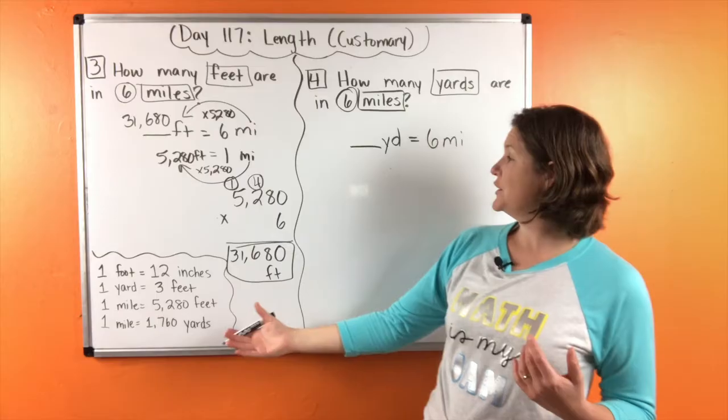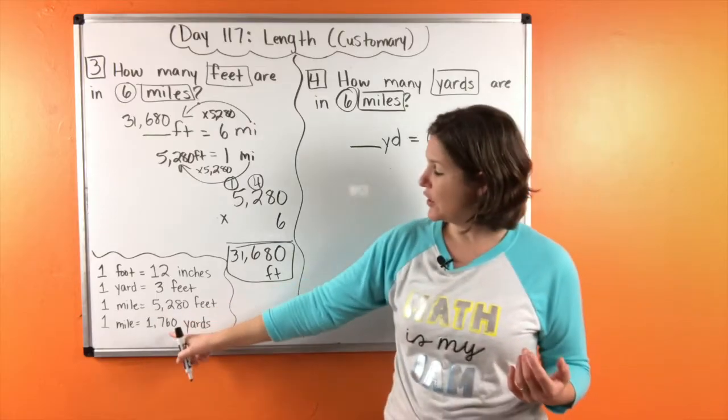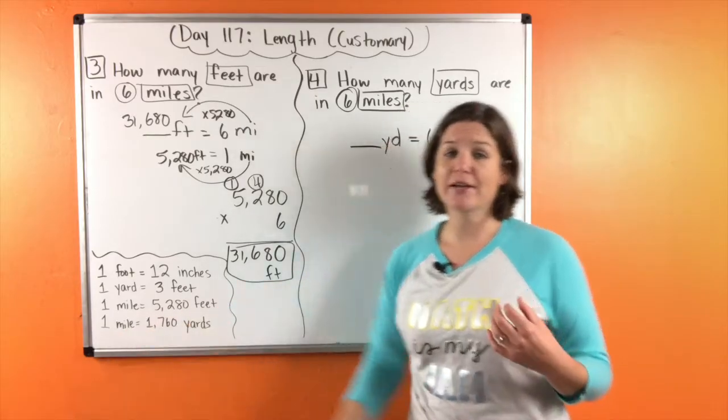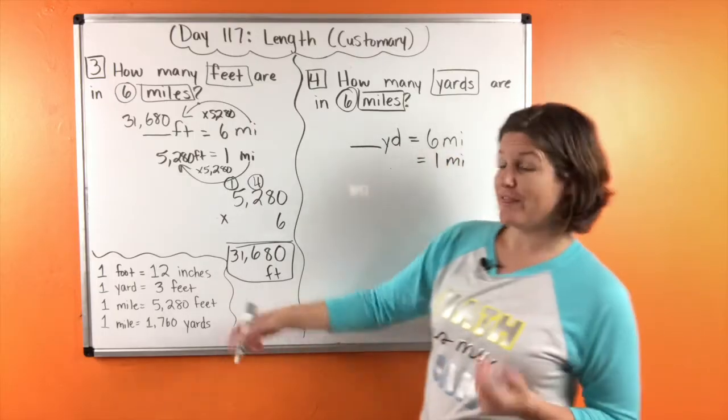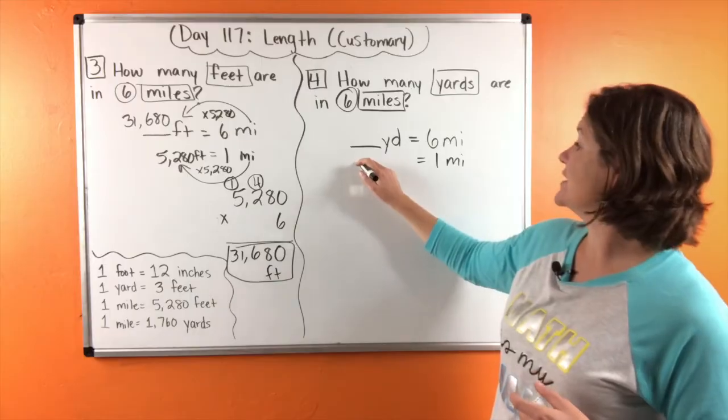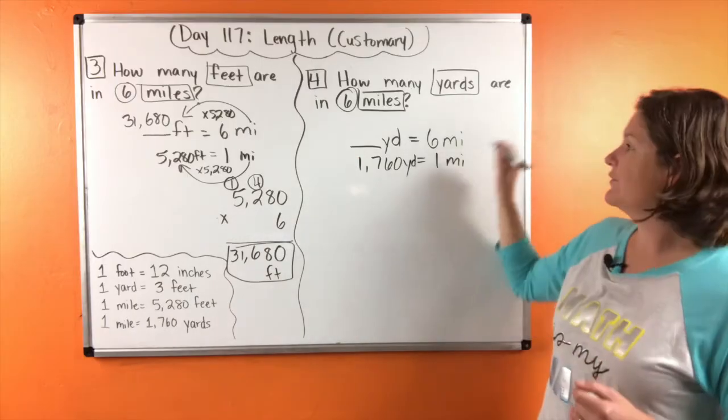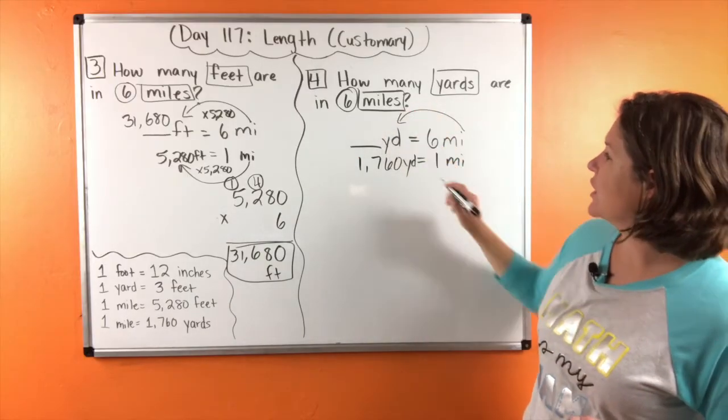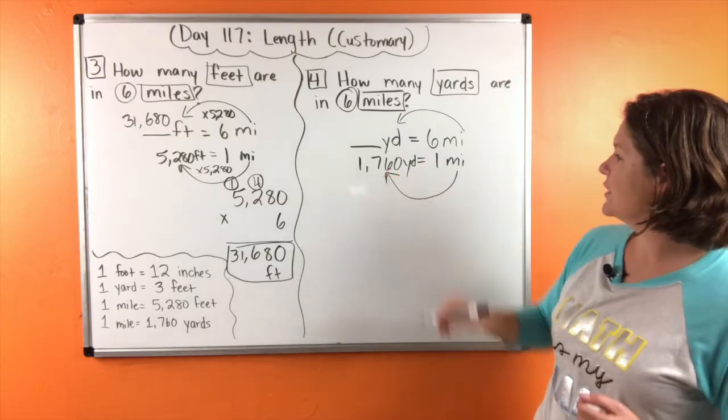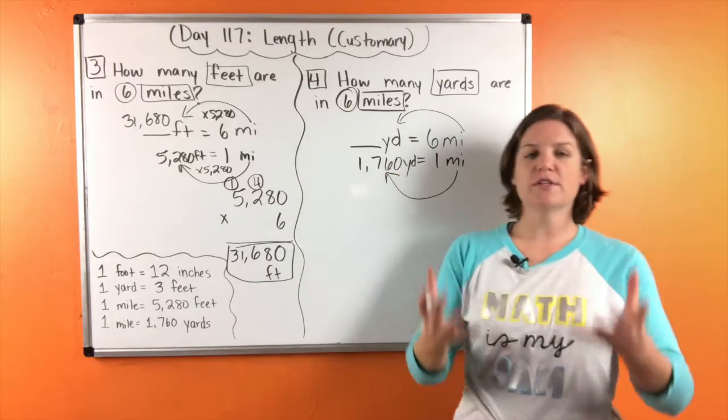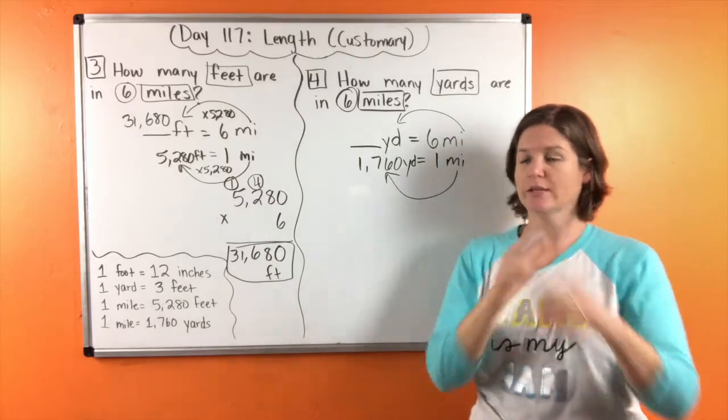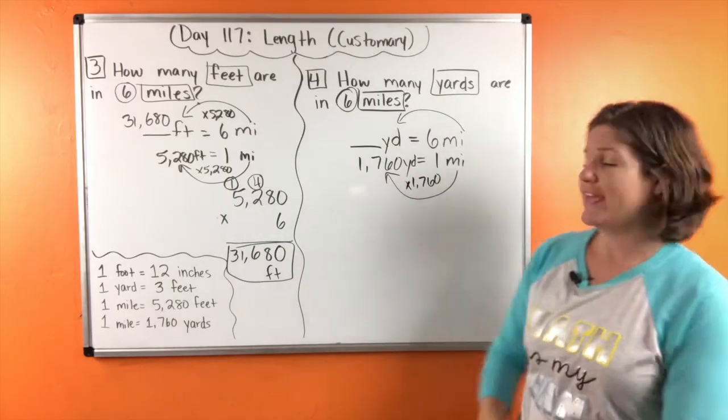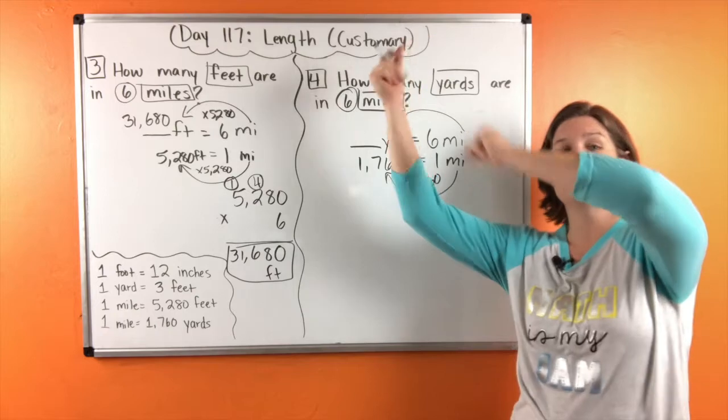So let's look down here. We see that yards and miles are right there. One mile equals 1,760 yards. We are converting from miles to yards. So one increasing to 1,760 we're multiplying by that same number and same on the bottom, same on the top.